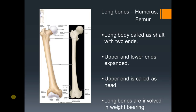Looking at the general structure of a long bone, the long part is called the shaft. A long bone has a shaft and both ends are expanded. One of the expanded ends, usually the upper end, is called the head. Other parts differ from bone to bone — you have the greater tubercle, lesser tubercle, condyles, and so on. Basically you have a shaft with expanded ends, the upper end usually being the head. In some bones, however, the head is present at the lower end. Long bones are mainly involved in weight bearing.